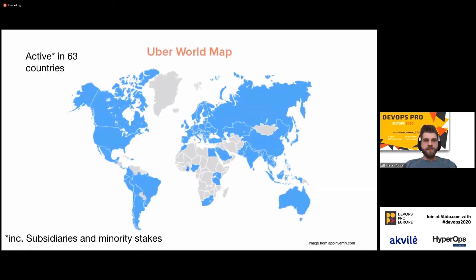I'm going to start with Uber scale. Uber is active in 63 countries, if we include subsidiaries and minority stakes. I would have wanted to say that we're active in Vilnius, but due to the quarantine we're not in Vilnius — but we are online. And online, you're still going to be able to order Uber Eats in a lot of countries, which for many countries right now is the only basic way to get restaurant food available.